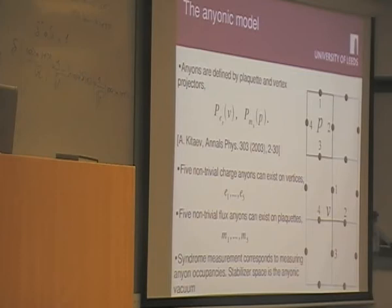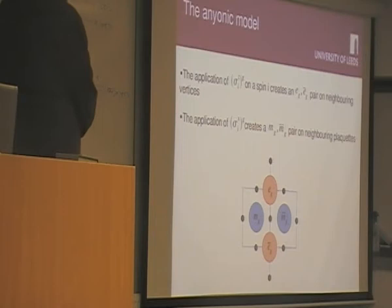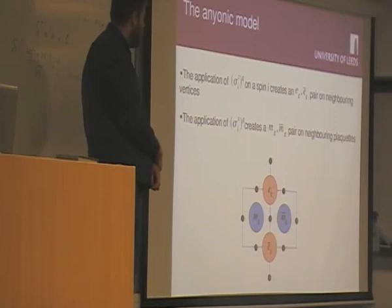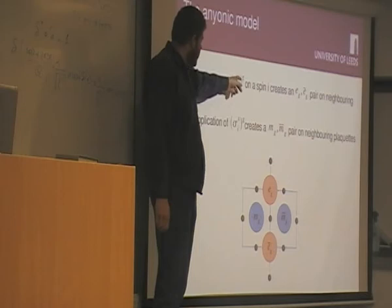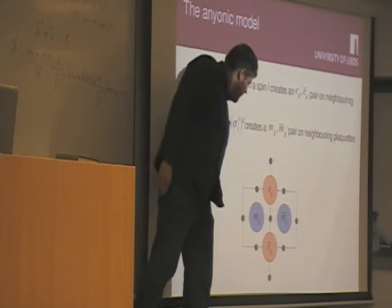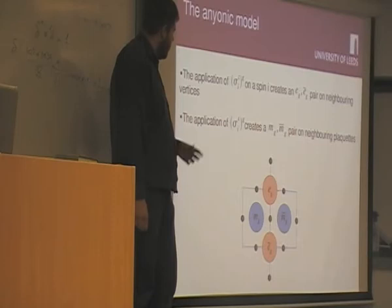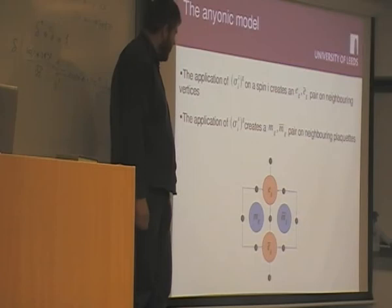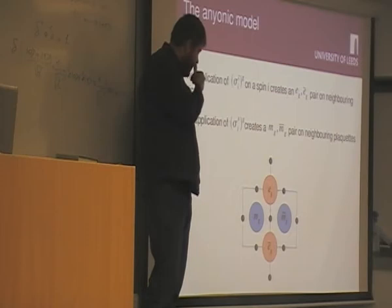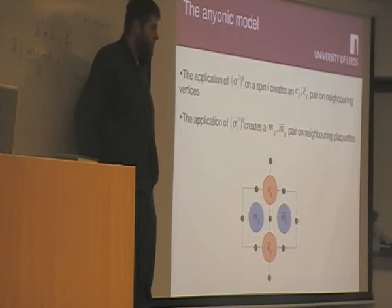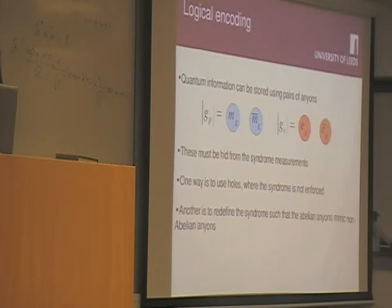If there are anyons, you know an error occurred and you know what type of error occurred. The operations that create anyons on this model are the Pauli operators. The application of this operation Z to the G on a lattice spin will create a pair of anyons on the two vertices connected by that spin. It will create E_G on one of them and its antiparticle E_G-bar on the other one. Similarly, sigma X_G on that same spin will create M_G and M_G-bar on the plaquettes.